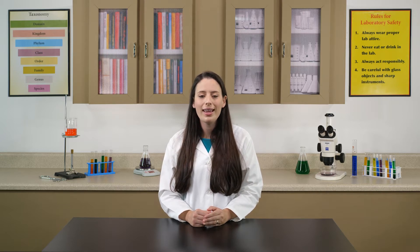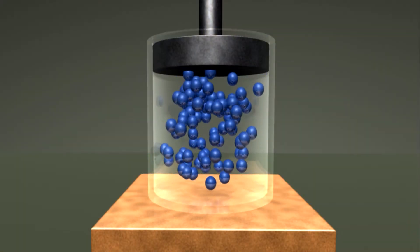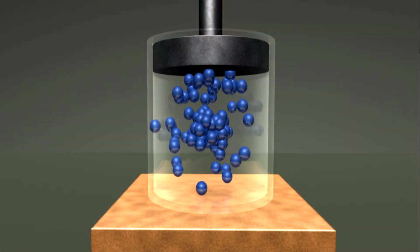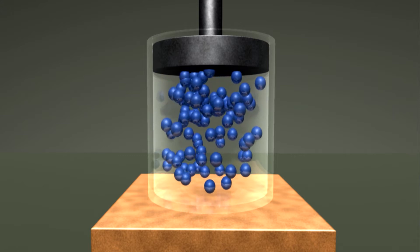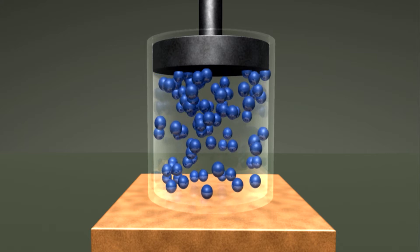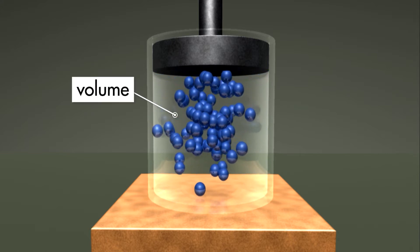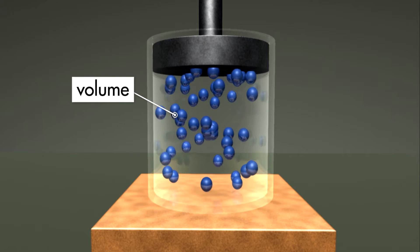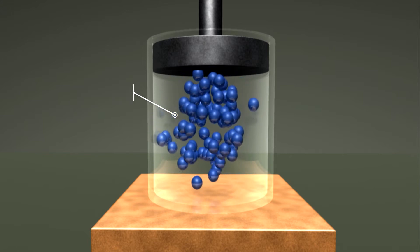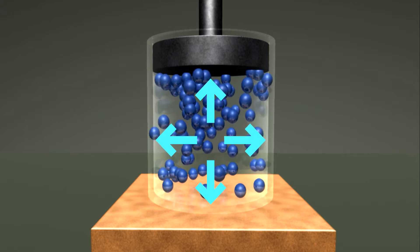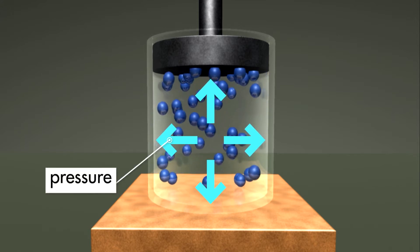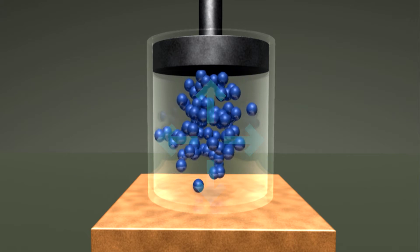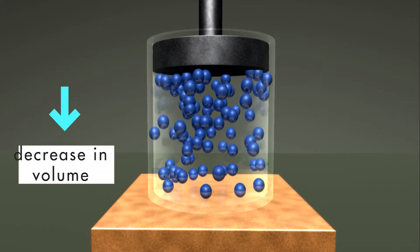To understand how air moves into and out of the lungs, we need to understand two natural laws regarding gases such as air. Although we cannot see air, we know that air has mass and takes up space like all matter in the universe. The scientific term for the amount of space something takes up is volume. Molecules of air are in constant motion; these molecules collide with one another and with the sides of their container, creating a force called pressure.